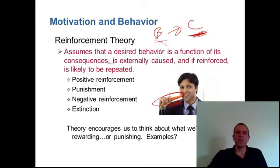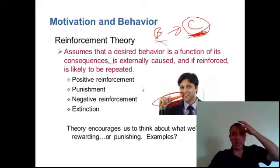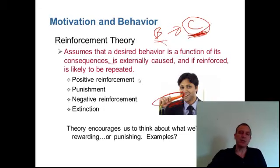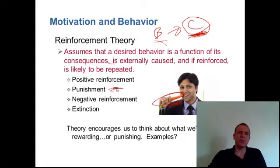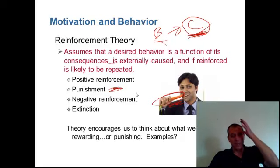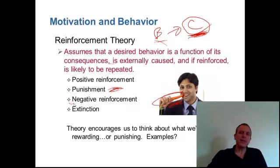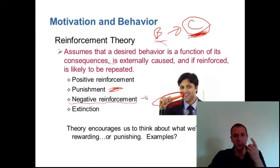Positive reinforcement is a positive consequence following a behavior. For example, you have a great quarter at work and you get a bonus. Punishment is a negative consequence following a behavior — you do something inappropriate, the boss calls you in the office and tells you not to do it again or you'll be in trouble.